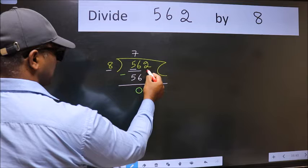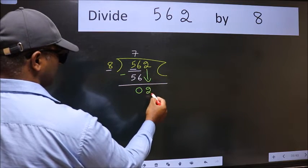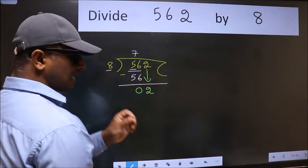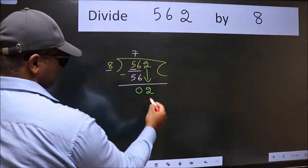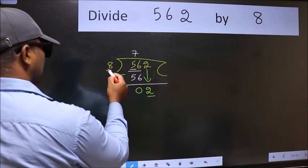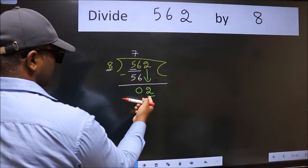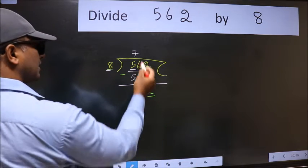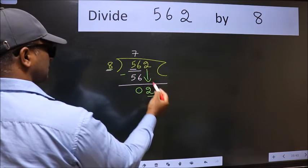After this, bring down the beside number, so 2 down. After this step the mistake happens. And the mistake is this: here we have 2 and here 8. 2 is smaller than 8, so what many do is they directly put dot, take 0.